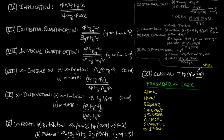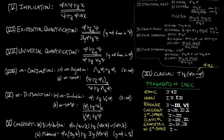We can now give the deduction systems for the different fragments of first-order logic. The atomic fragment uses rules one and two. Horn logic uses one, two, and three. Regular logic uses one, two, three, and six. Coherent logic uses one, two, three, four, six, and ten. First-order logic uses one through seven. Classical first-order logic uses one through seven and eleven. Geometric logic uses one through six and nine. Infinitary first-order logic uses one through nine.